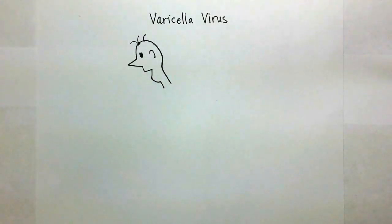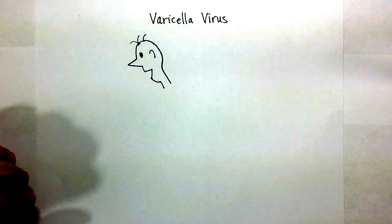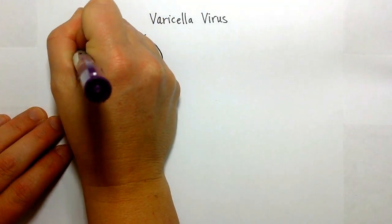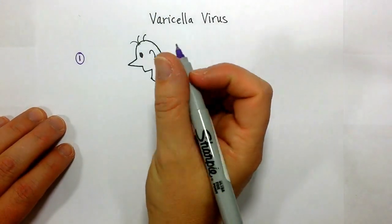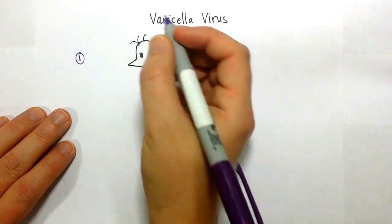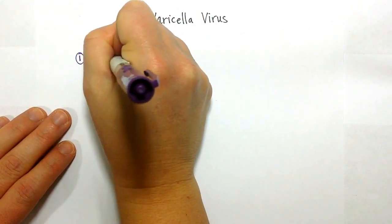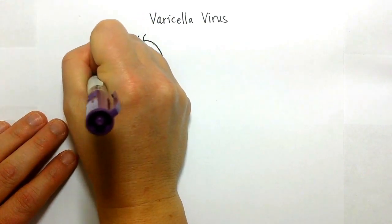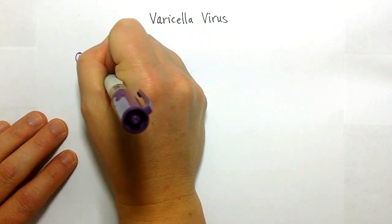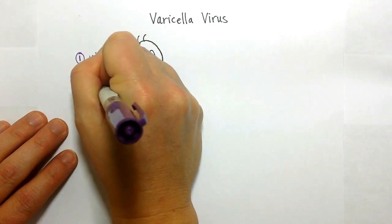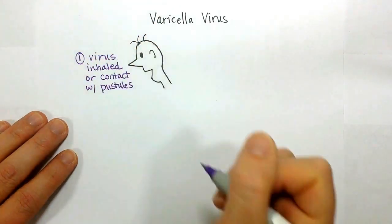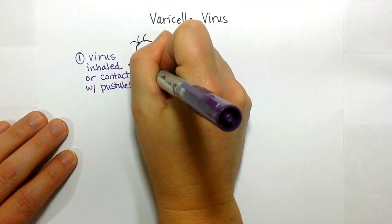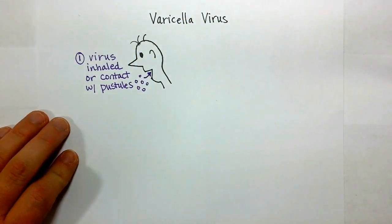The first thing that happens — get out your purple pen — is that the varicella virus has to be inhaled, or possibly a little bit of the virus could be on someone's hands from touching someone else's chicken pox pustules. So the virus is inhaled, like by coughing, or through contact with pustules from someone else that has chicken pox. Those viruses go into the respiratory tract. That's the first step.